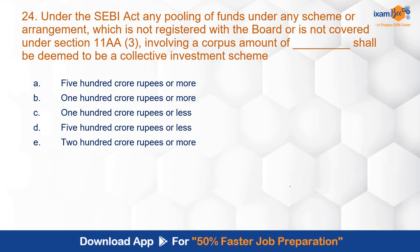Question 24: Under the SEBI Act, any pooling of funds under any scheme or arrangement which is not registered with the board or is not covered under section 11AA(3), involving a corpus amount of how much, shall be deemed to be a collective investment scheme? The correct answer is B — 100 crore rupees or more. This is section 11AA of the SEBI Act on collective investment schemes.